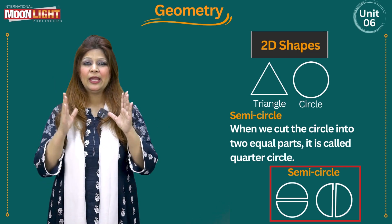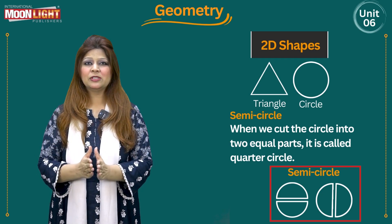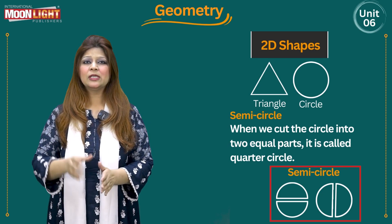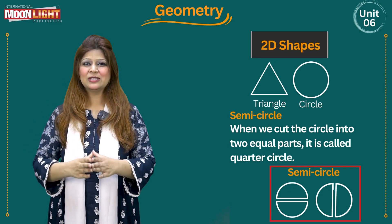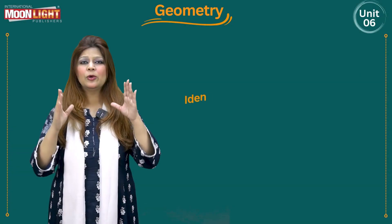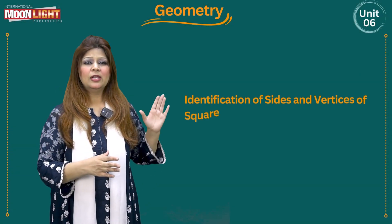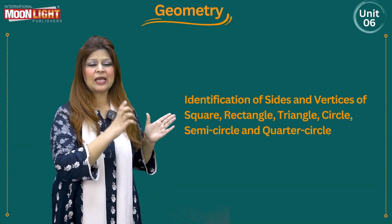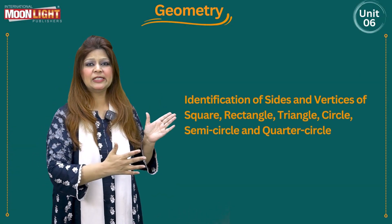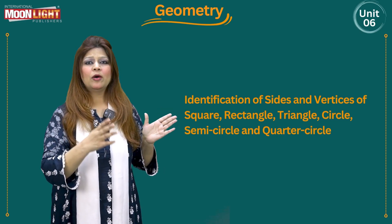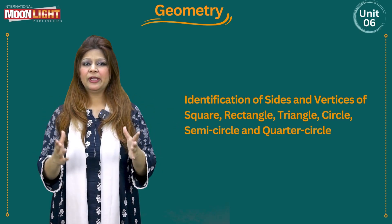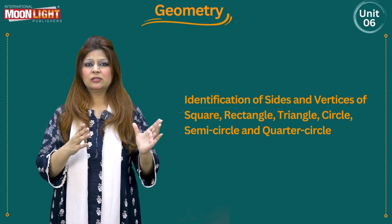Quarter of the circle means in other words one fourth of the circle. So here we go — let's do identification of sides and vertices of square, rectangle, triangle, circle, semicircle and quarter circle.